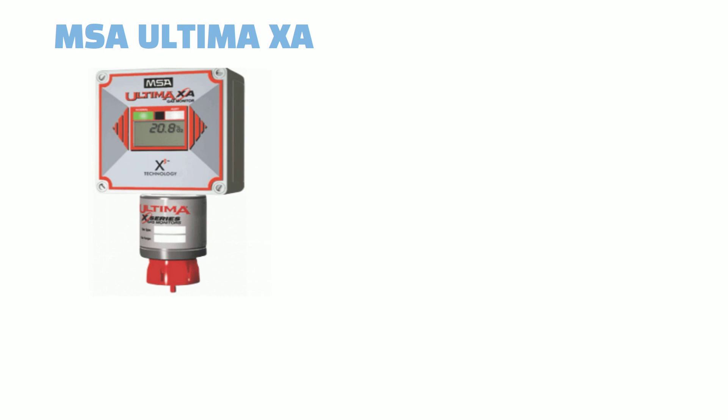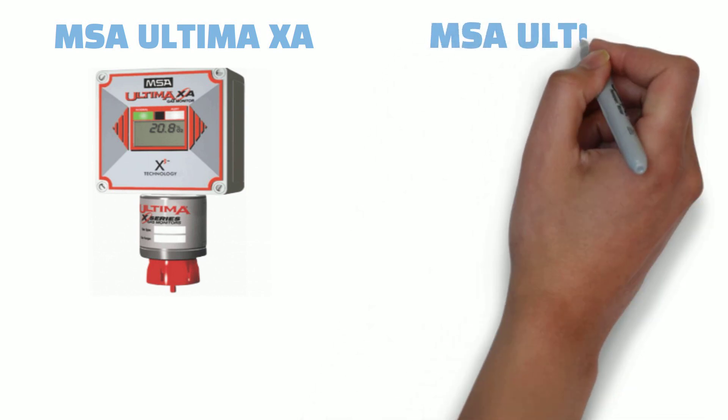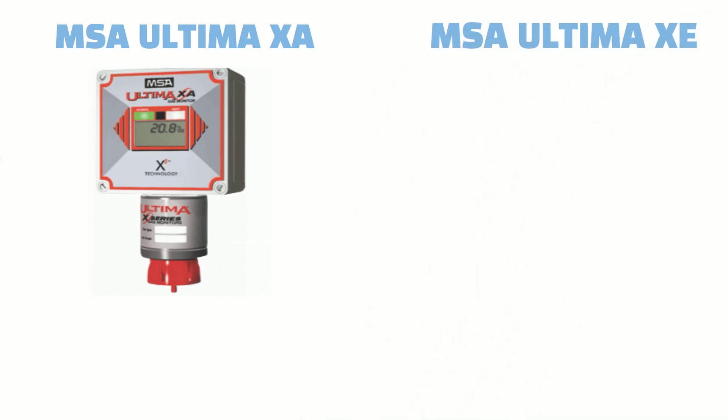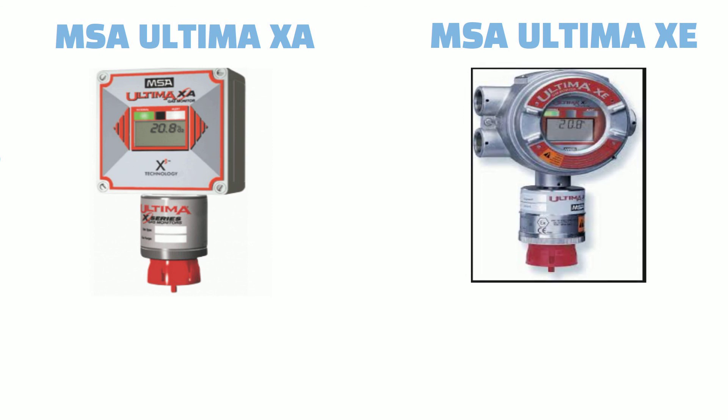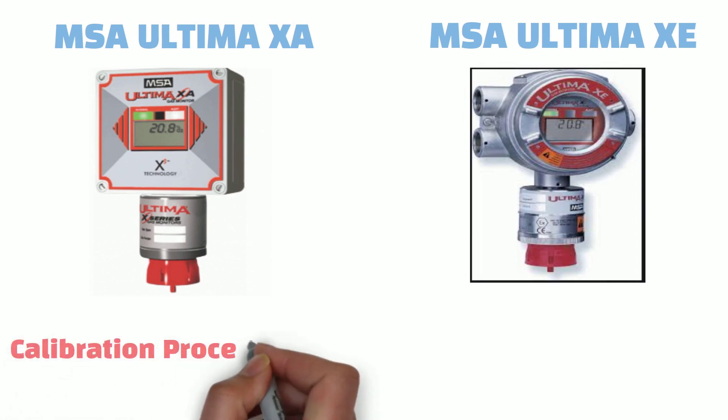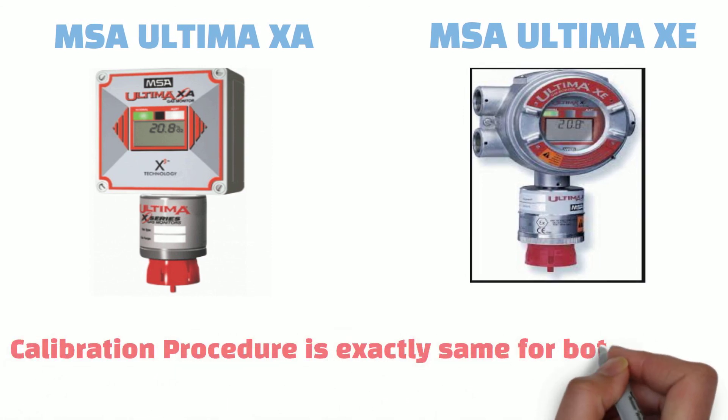You can see MSA Ultima XA model is on the left-hand side and MSA Ultima XE model on the right-hand side. Both are different models but calibration procedure is exactly same for both models. So you can use same procedure to calibrate both models.